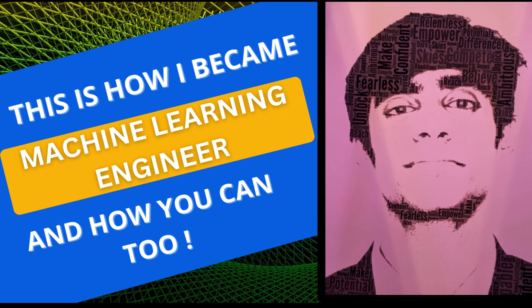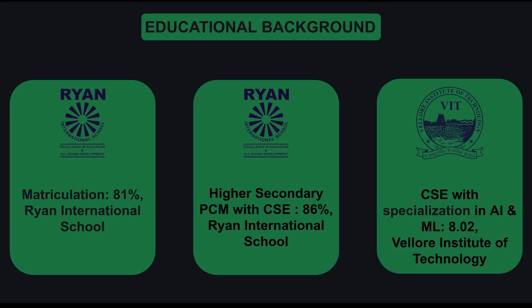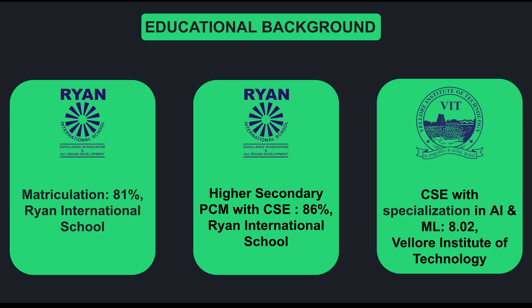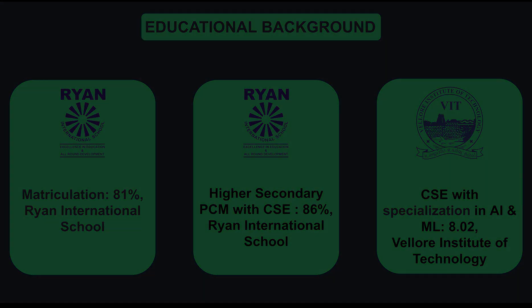Starting with my educational background: I studied at Ryan International School and graduated from VIT. My percentage and CGPA weren't that good, so during on-campus placements for data science and machine learning roles, I definitely faced a setback. I would recommend anyone preparing for ML or data science roles to keep a very high CGPA — at least 9 — so that you can sit for companies hiring for those roles.